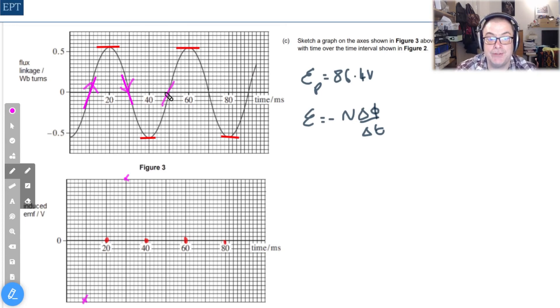Now we can carry that process on through the other gradient points of maximum gradient along the graph like this, and you'll begin to see a negative sine wave taking form before your eyes.